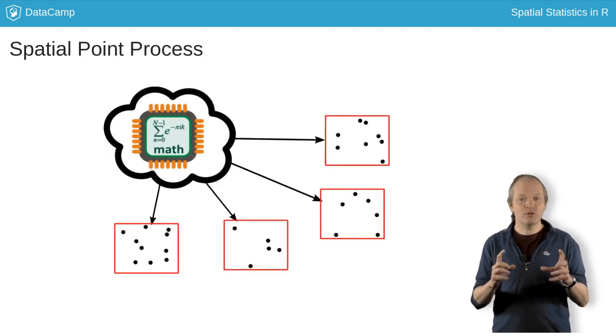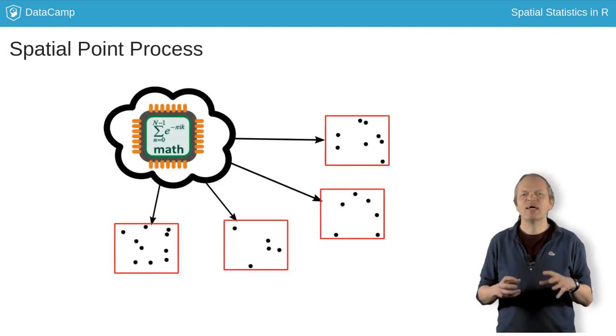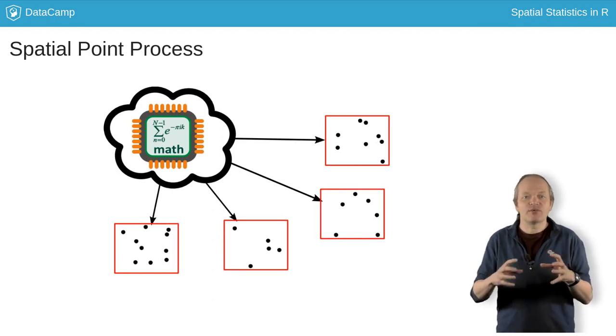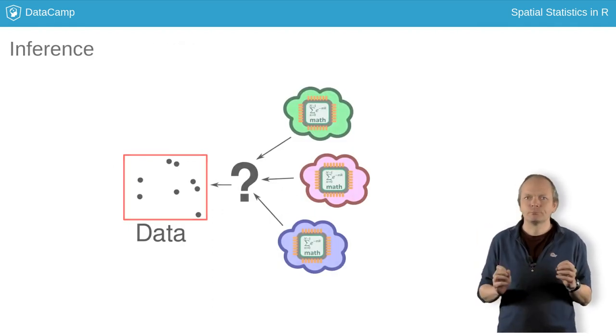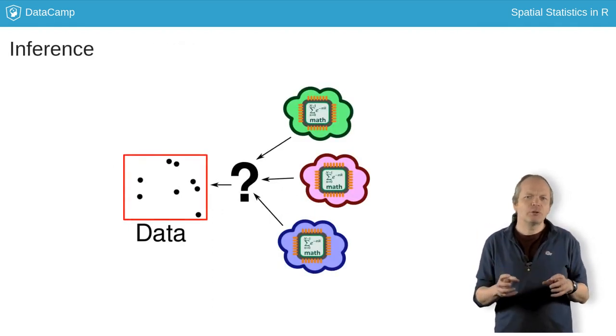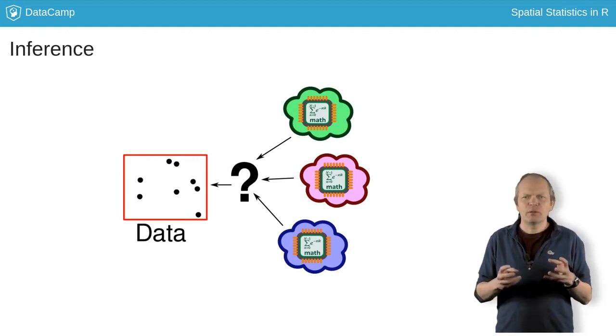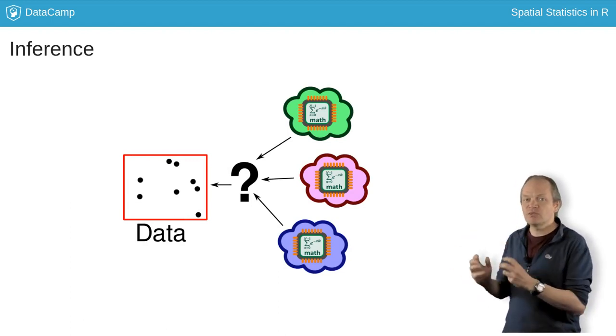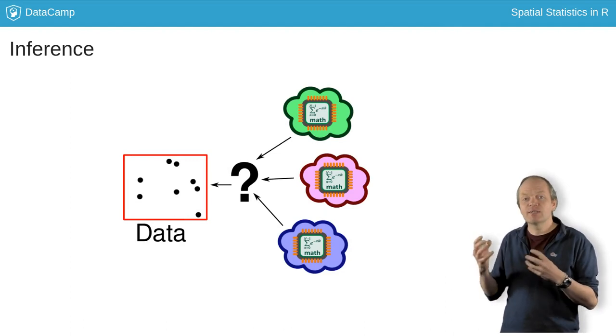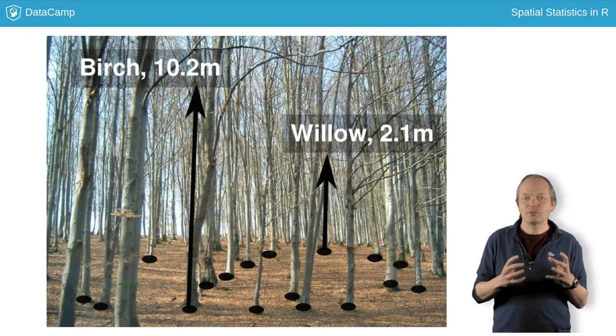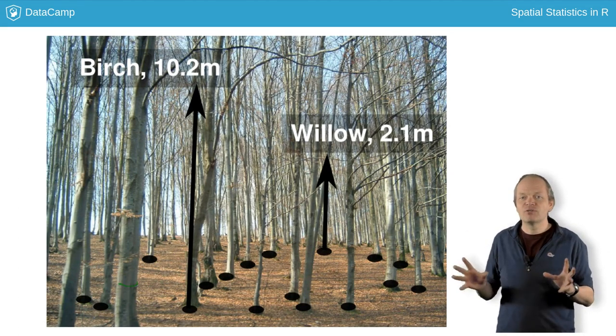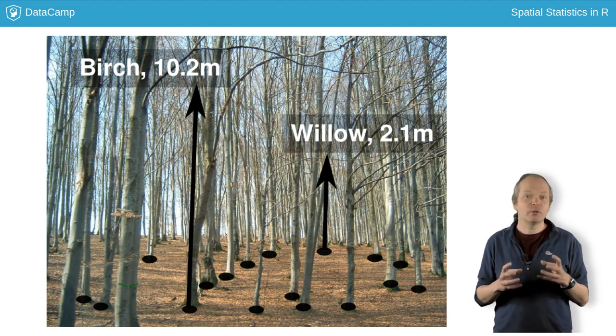A spatial point process is a stochastic process. It's like a random number generator for events in a window. Much of spatial point pattern analysis is spent making inferences about the point process that may have generated a dataset. Spatial point processes may be defined over the whole of two-dimensional space, but are only observed in a window.